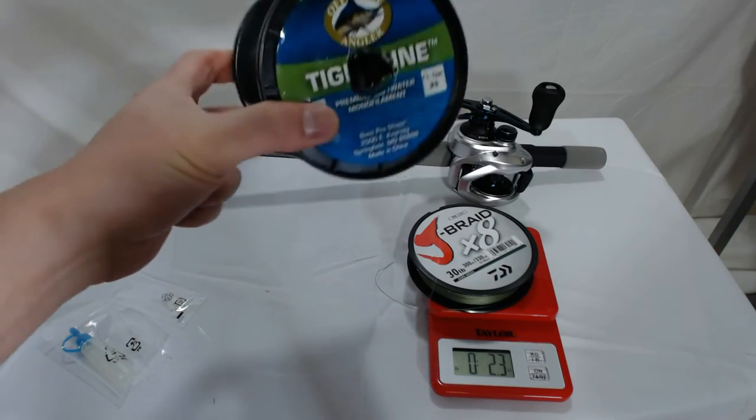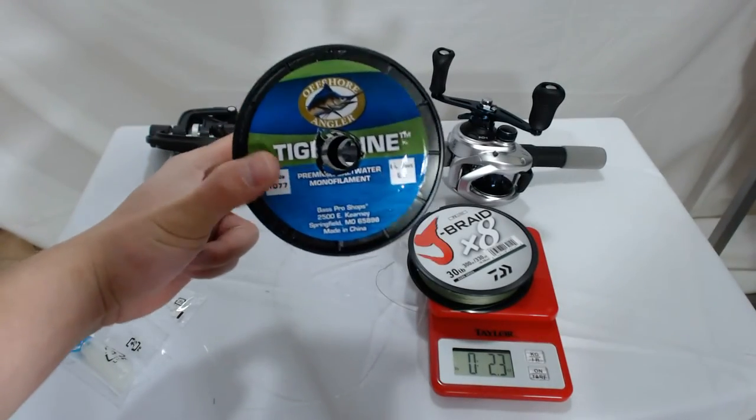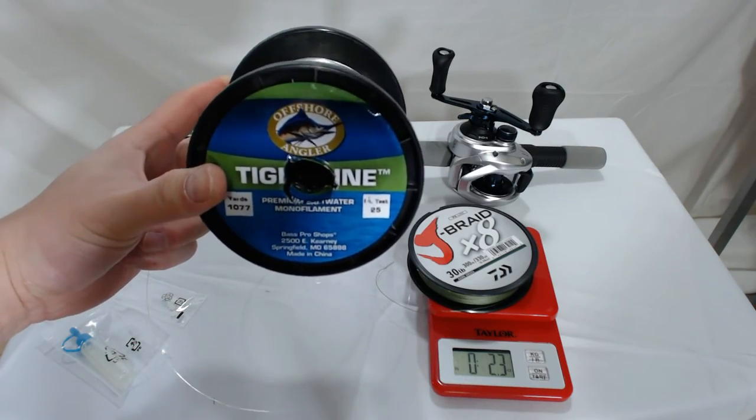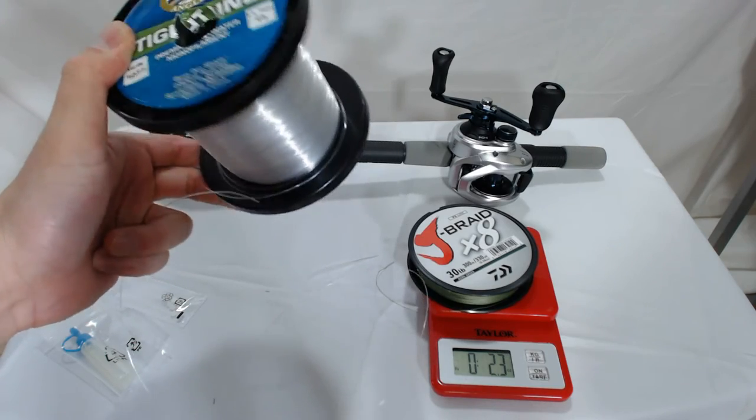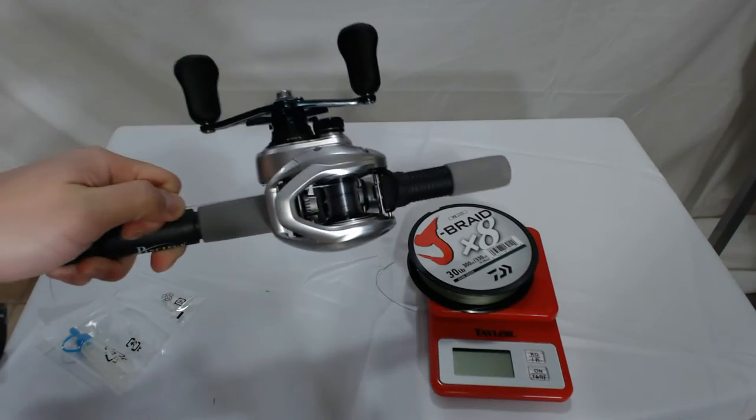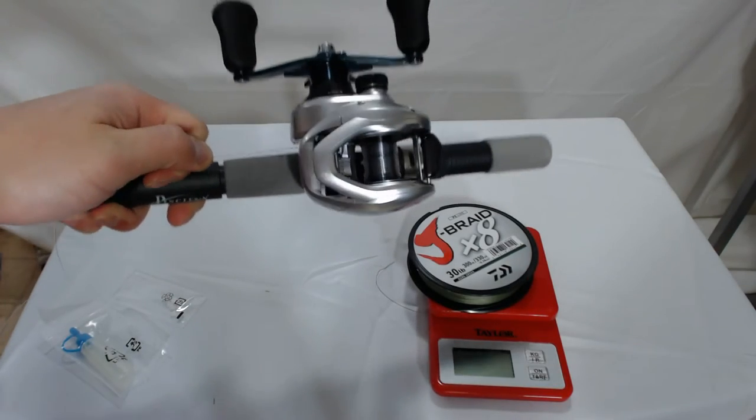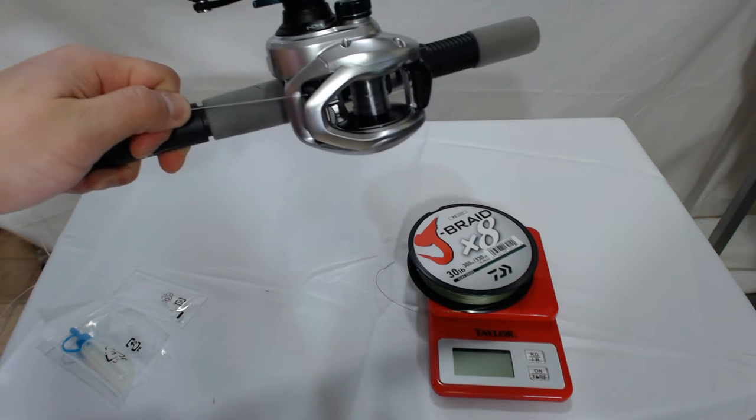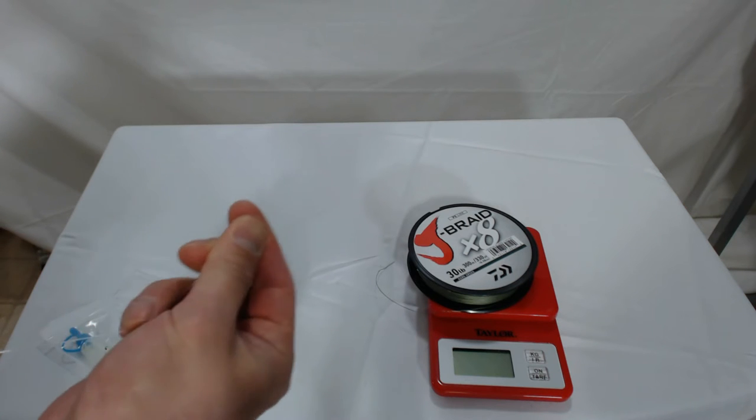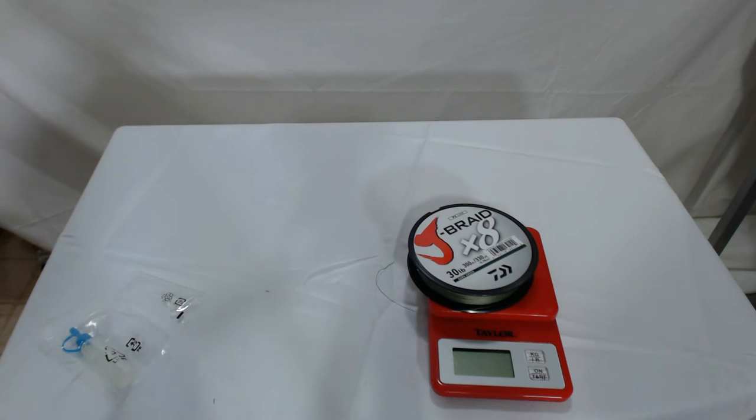I'll be putting on 25 pound mono backing on this. This is just Tightline Offshore Wrangler brand from BPS. I just put a thin layer of mono backing and I used the armor knot. I'll be putting on the braid by tying uni to uni, mono to braid.